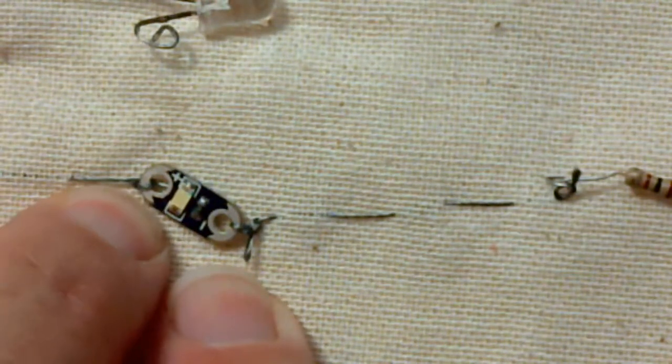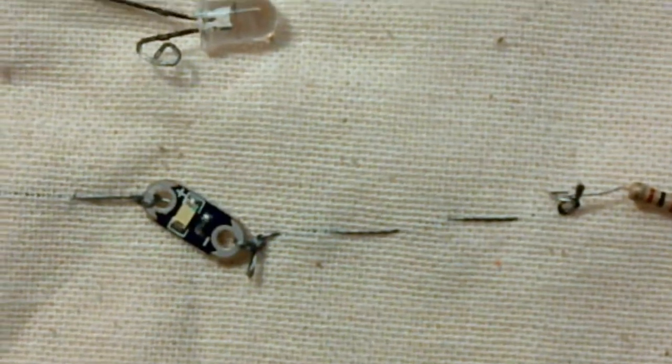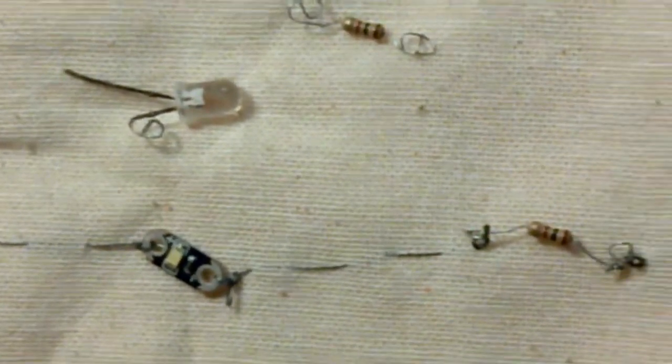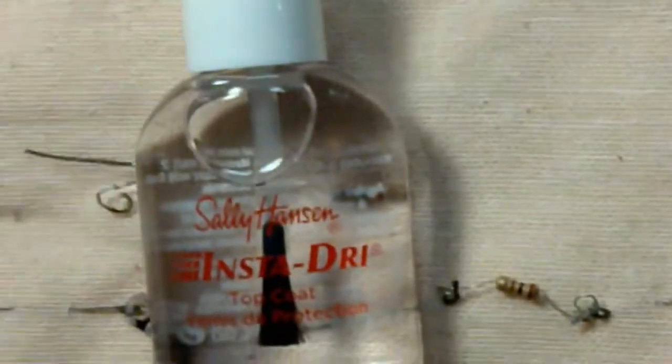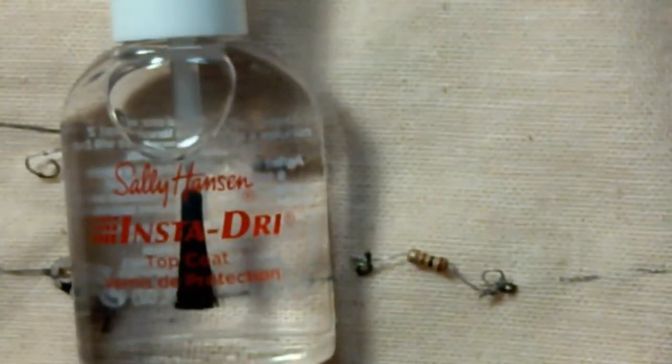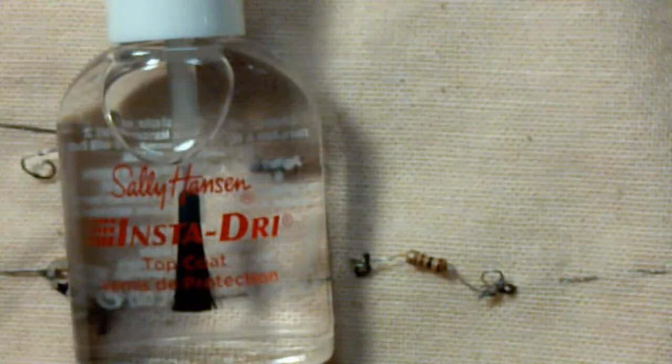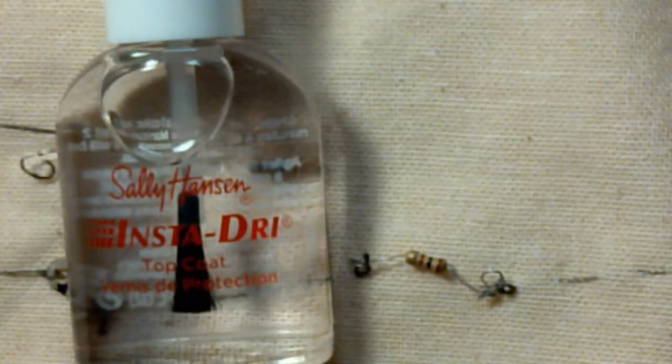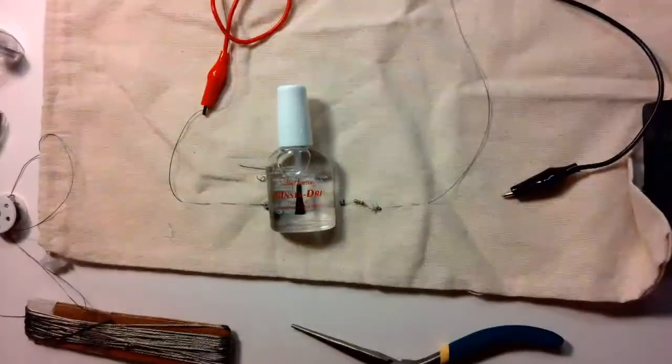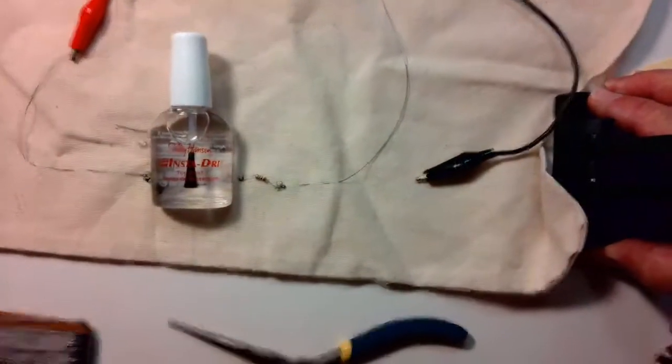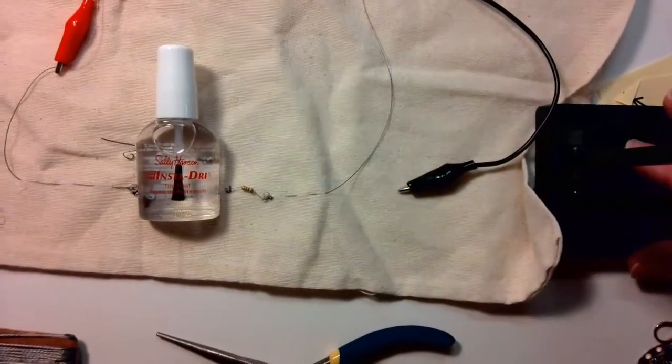That could be because those knots can come undone, and the solution we have for that is transparent nail polish. When you put a little dot of transparent nail polish, you just put that right on to the knot.